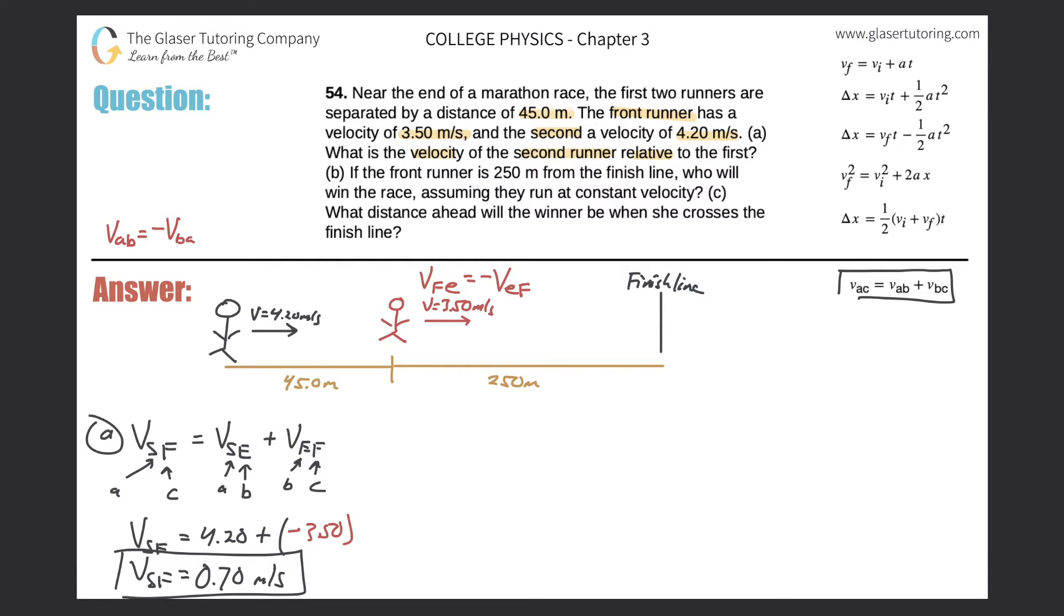0.70 meters per second. So we got that relative velocity. So letter B now. If the front runner is 250 meters from the finish line, as shown in the picture, who will win the race, assuming they run at a constant velocity?